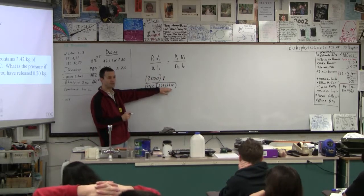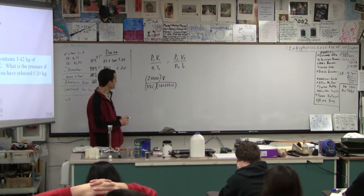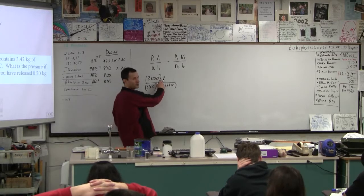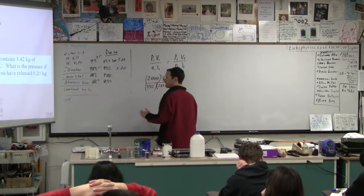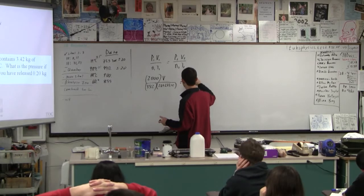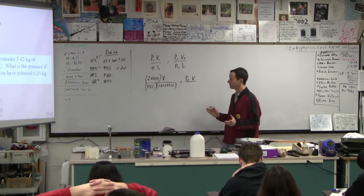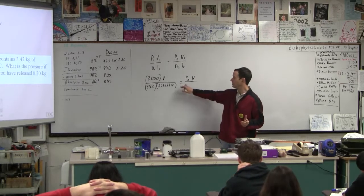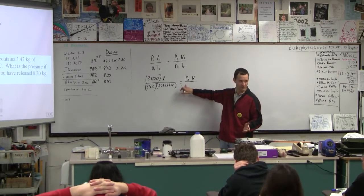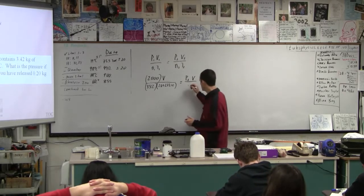We don't know the volume, so what are we going to do — are we just out of luck? No, it's the same volume in the next situation. So the new pressure P2 times the same volume, divided by — if we've released 0.2 kilograms, how many kilograms do we have? We don't put 0.2 in there as the mass, because that's not what's really there. If it started at 3.42 and you released 0.2, then you have 3.22 kg remaining.